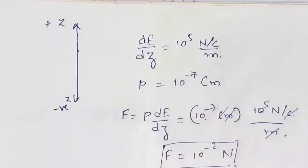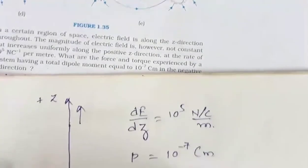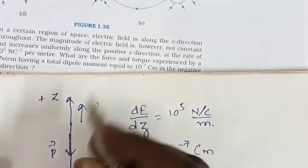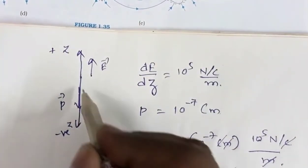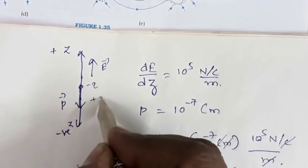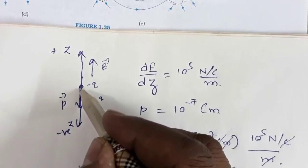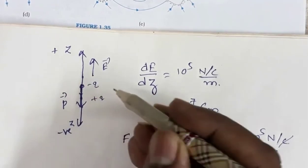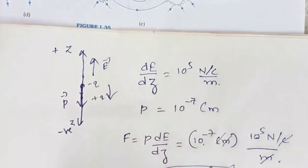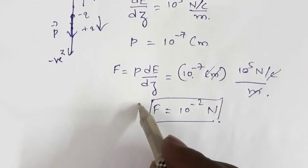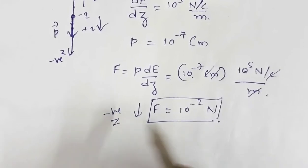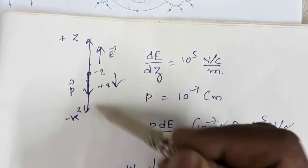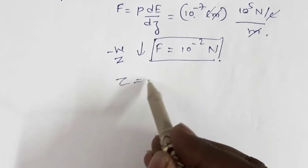Now for the direction: the electric field is increasing along the positive Z direction, but the dipole moment is in the negative Z direction — they are antiparallel. The negative charge is on the positive Z side and the positive charge is on the negative Z side. The net force on the dipole is in the negative Z direction. Since the force acts along the dipole axis, the total torque on the dipole is zero.